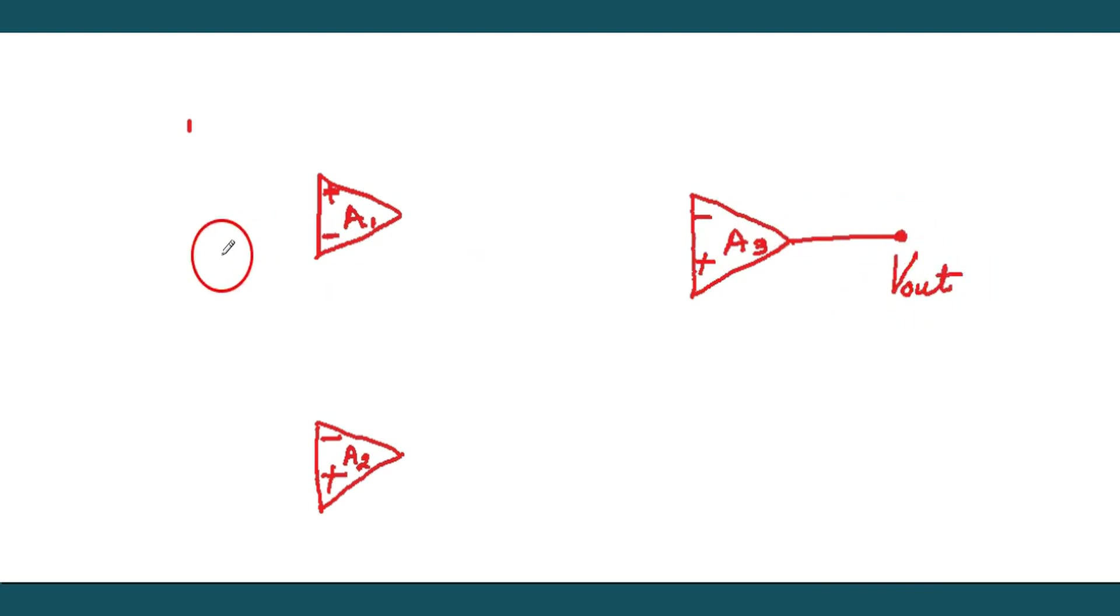Output of A3, plus means non-inverting. Input 1 is attached to the non-inverting. Input 2 is attached to the non-inverting of A2.